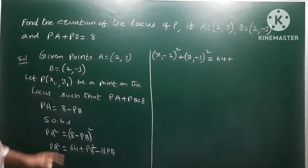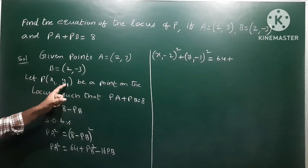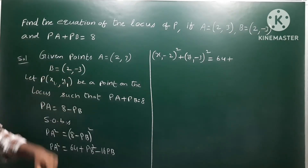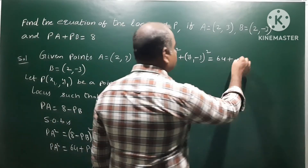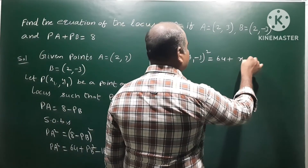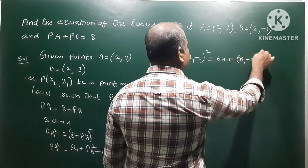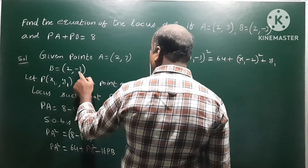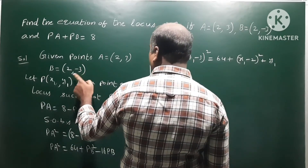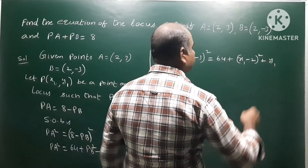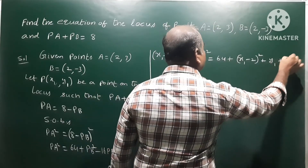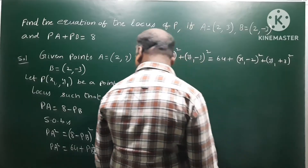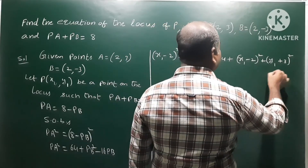Similarly, PB² — here P is (x1, y1) and B is (x2, y2) which is (2, -3) — so PB² equals (x1 minus 2)² plus (y1 plus 3)² . The right side includes 64 plus PB² minus 16 PB.